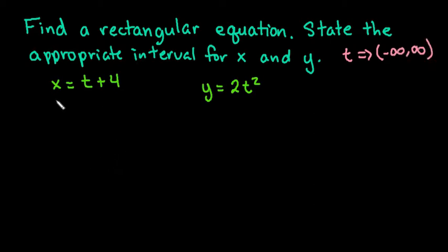So what we have here is the parametric equation that x equals t plus 4 and y equals 2t squared. So we have x and y both defined in terms of t. What we want to do is we want just one equation that contains x and y.